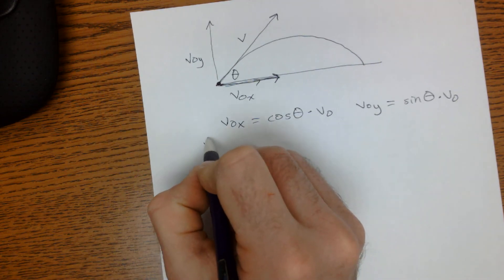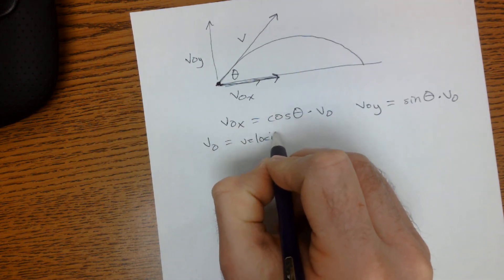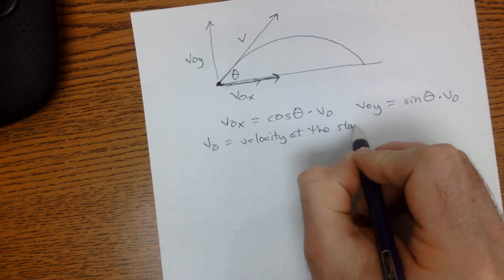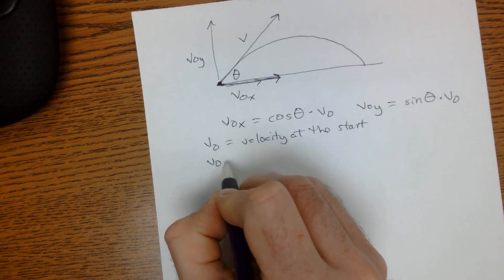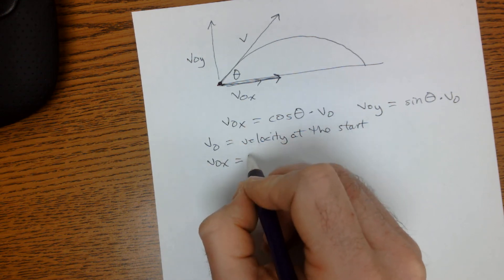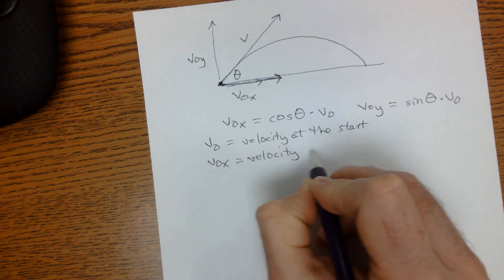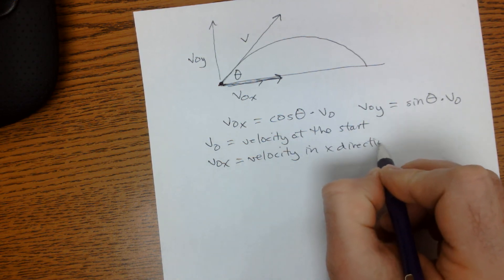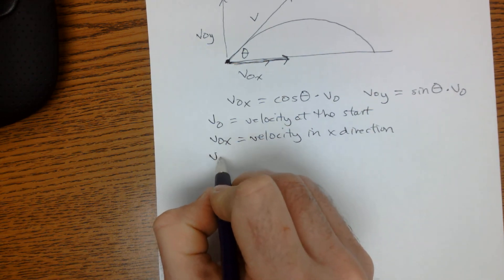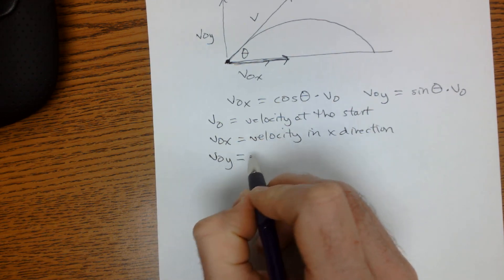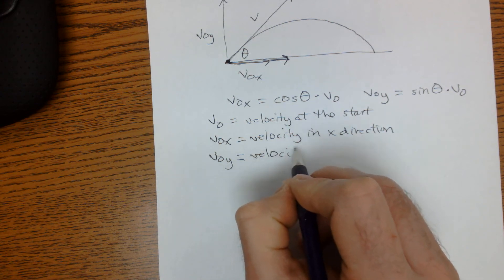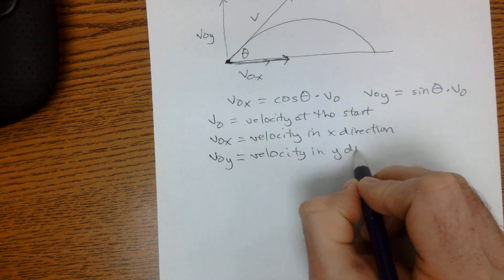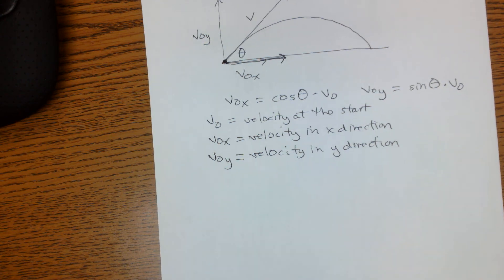So v0 is velocity at the start. v0x is velocity in the x direction horizontally. v0y is velocity initially in the y direction.